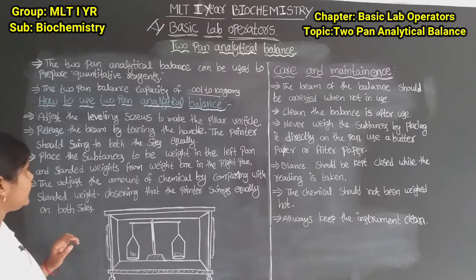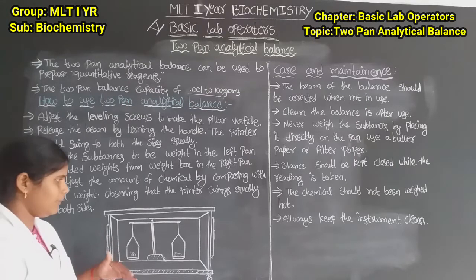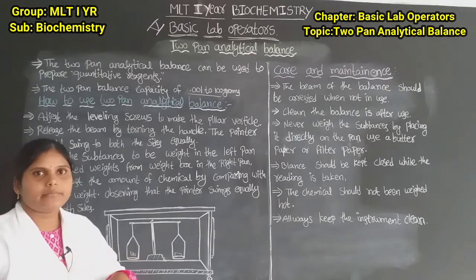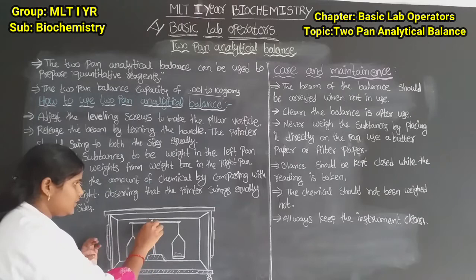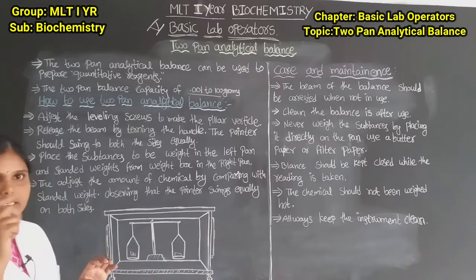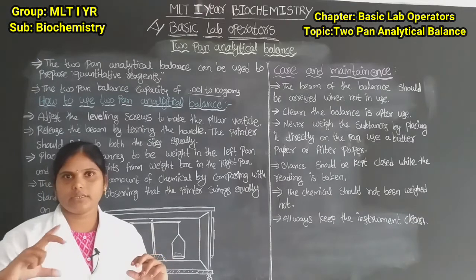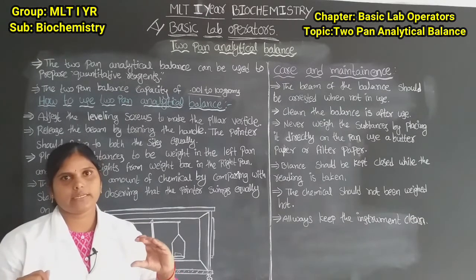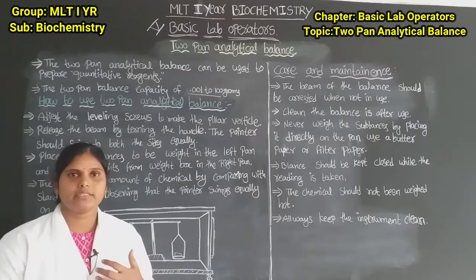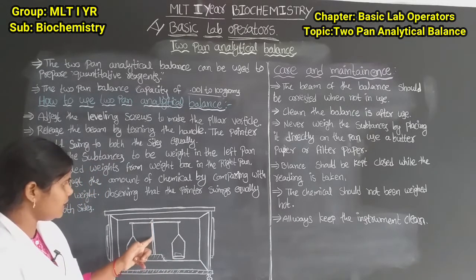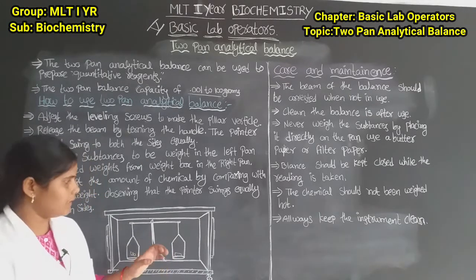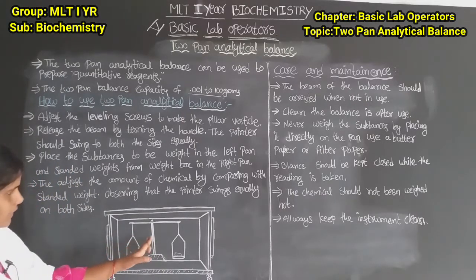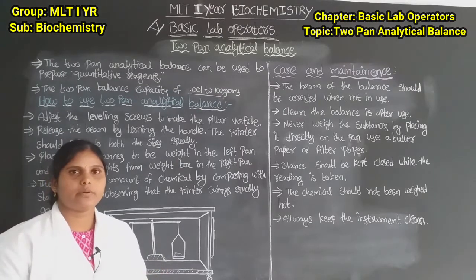Adjust the amount of chemicals by comparing with the standard weight, observing that the pointer swings equally on both sides. Whenever the chemical and the weight boxes are equal, observe that the pointer swings equally. We can use filter paper or butter paper to place the substances. Then close the doors of the balance.